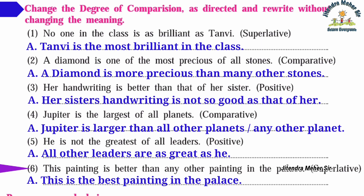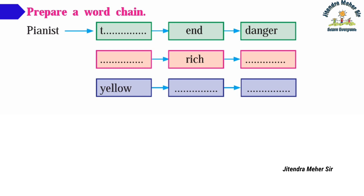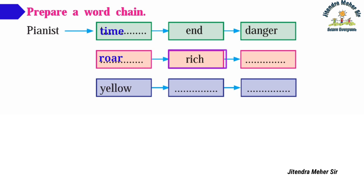Activity nine: Prepare a word chain — a new word starting from the last letter of the previous word. Pianist → time → end → danger → roar → rich → honey → yellow → well → love.